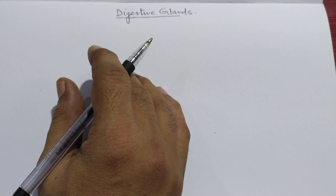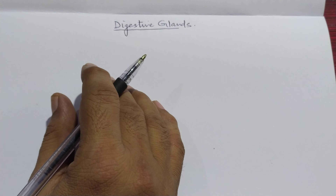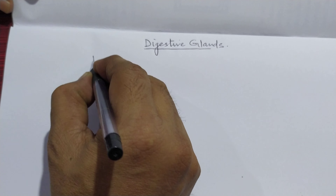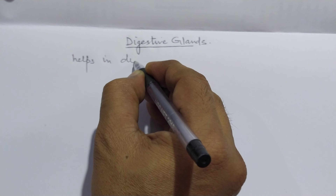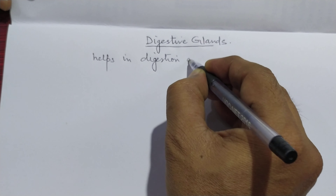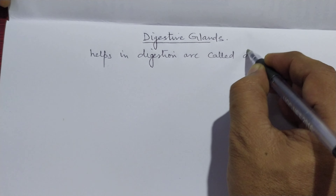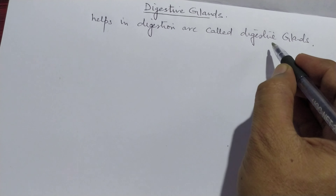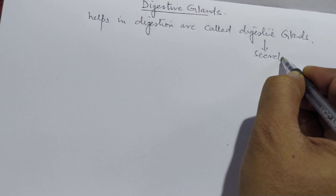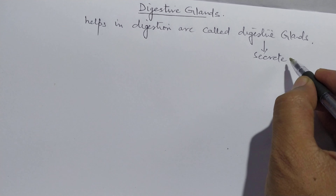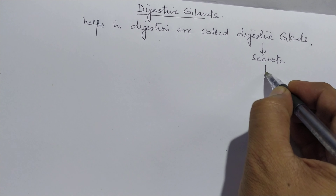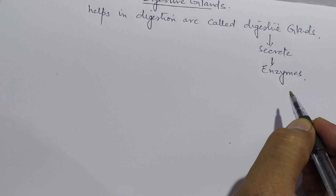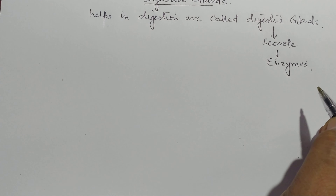Good morning students. Today's topic for 10th class is digestive glands. What are digestive glands? The glands which help in digestion are called digestive glands. These digestive glands secrete their secretions which are known as enzymes, and these enzymes help in the process of digestion.